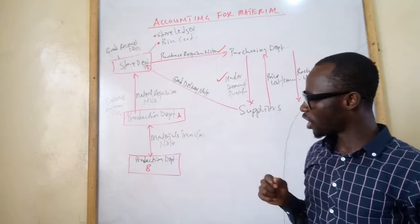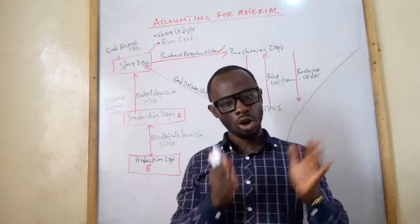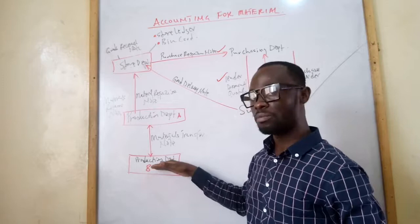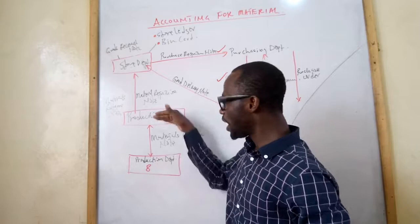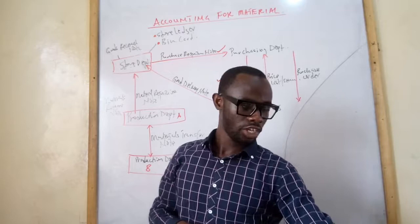The last document is the material transfer note. Sometimes there are more than one production department. For example, a product may go through process one and process two. If department A transfers raw material to department B instead of returning it to the store, they fill a document called the material transfer note. These are the various documents used in the issuing and purchasing of inventory.